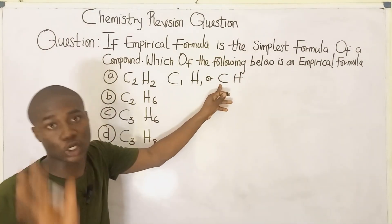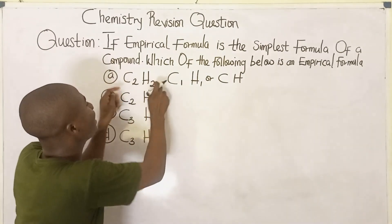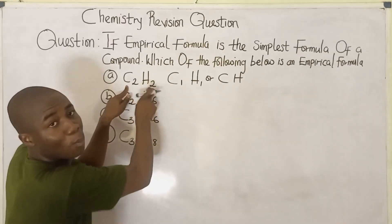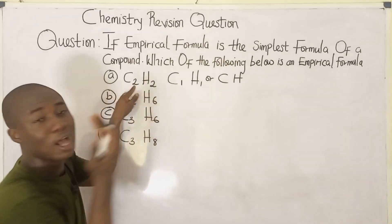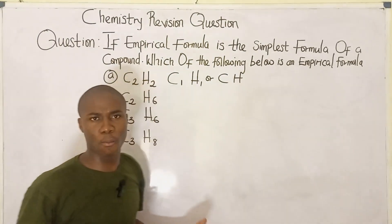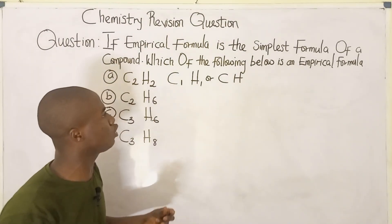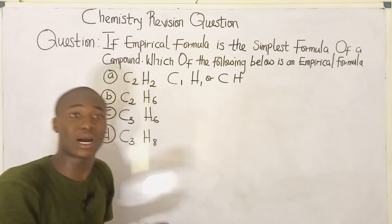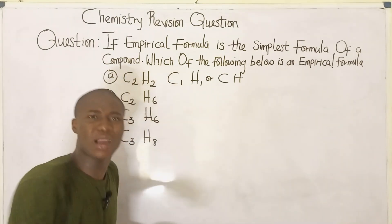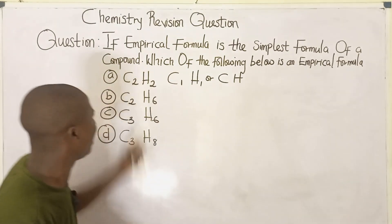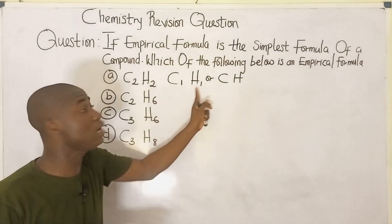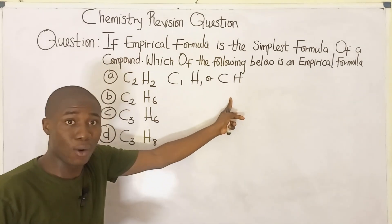C₁H₁ is simply written as CH. So C₂H₂ is not the simplest form this compound can exist, meaning it cannot be the empirical formula. The empirical formula is the simplest form a compound can exist, and CH is the simpler form here.